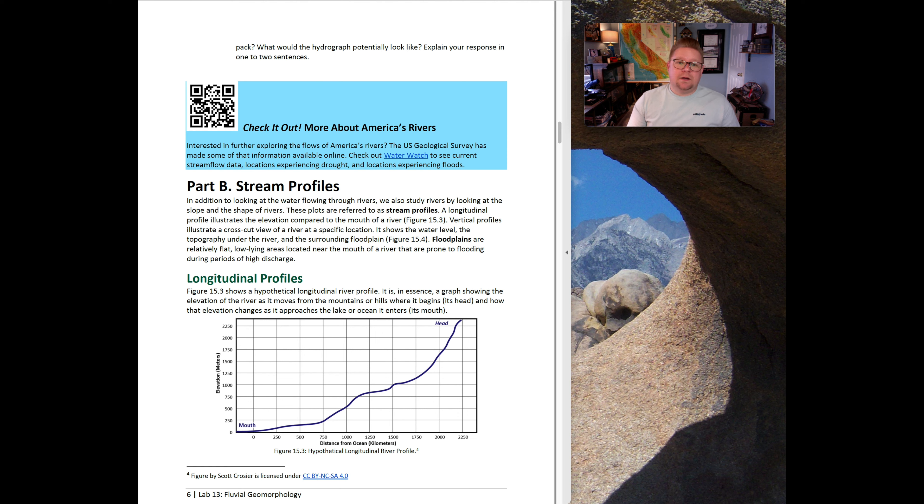Welcome to part B, stream profiles. In addition to velocity, another thing we can look at is the profile or longitudinal profile in which we look at what happens with the slope or gradient between the head where the stream begins and its mouth where it ends. Figure 15.3 shows a hypothetical longitudinal profile. It is a graph showing the elevation of the river as it moves from the mountain all the way down to where it approaches the ocean, a lake, or a large body of water.